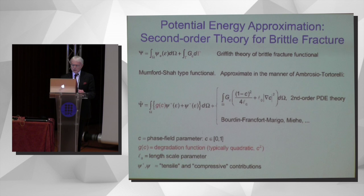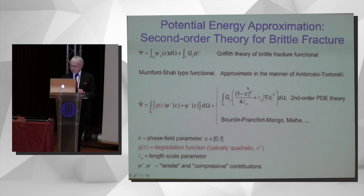The idea is to replace the surface integral with a volume integral in terms of the phase field. The phase field essentially damages the strain energy, with a split between the tensile part and the compressive part — we only want to damage the tensile part. This is called the stress degradation function, and typically it is quadratic, C squared, which emanates from the early days of the Ambrosio–Tortorelli approximation. In the mathematics literature, this functional has been shown to converge such that the signature of the limit as L0 goes to zero is the surface of the cracked body.